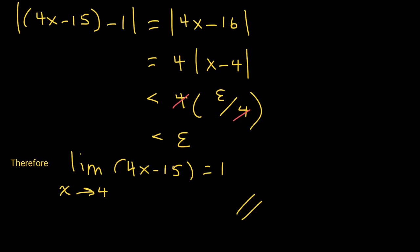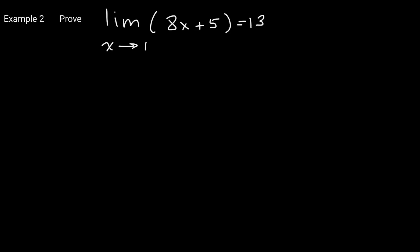In the second example, we want to prove that the limit of 8x plus 5 as x approaches 1 is 13. Notice that plugging in 1: 8 times 1 is 8, and 8 plus 5 is 13. But we want to use the precise definition to prove this limit. Let's start by finding delta.